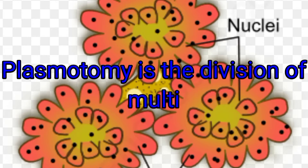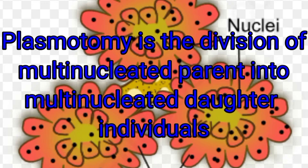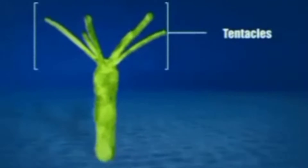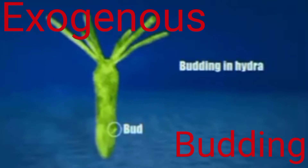Plasmotomy is the division of a multinucleated parent into multinucleated daughter individuals without the division of nuclei. Next is budding. When buds are formed on the outer surface of the parent body, it is known as exogenous budding. Example: Hydra.